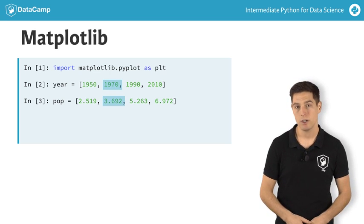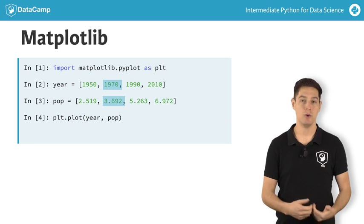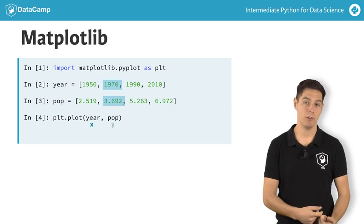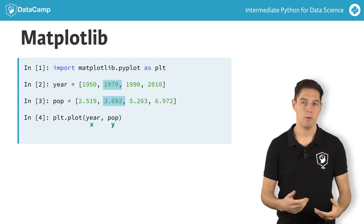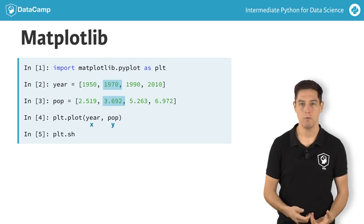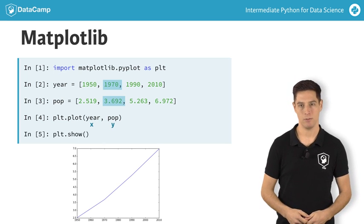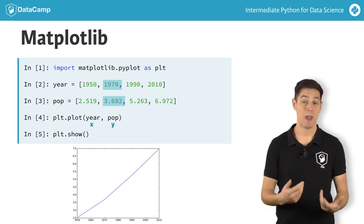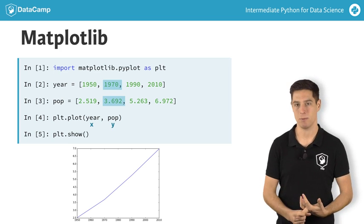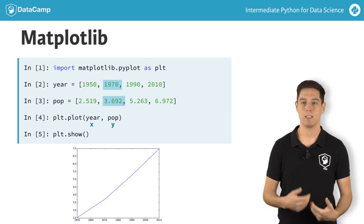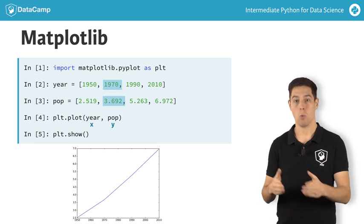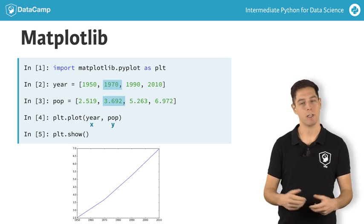To plot this data as a line chart, we call plt.plot and use our two lists as arguments. The first argument corresponds to the horizontal axis, and the second one to the vertical axis. You might think that a plot will pop up right now, but Python is pretty lazy. It will wait for the show function to actually display the plot. This is because you might want to add some extra ingredients to your plot before actually displaying it, such as titles and label customizations. I'll talk about that some more later on. Just remember this: the plot function tells Python what to plot and how to plot it. Show actually displays the plot.